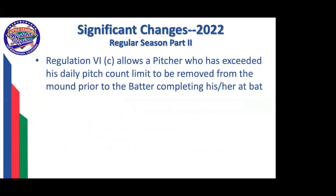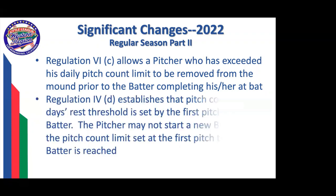Regulation 6C in the pitching section now allows a pitcher who has met his daily pitch count to be removed from the mound prior to the batter completing his at-bat. Additionally, another part of Regulation 6 establishes that the pitch count per day's rest threshold is set by the first pitch to a batter — no longer the pitch at the end of the count. The pitcher may not start a new batter once the pitch count limit is reached.